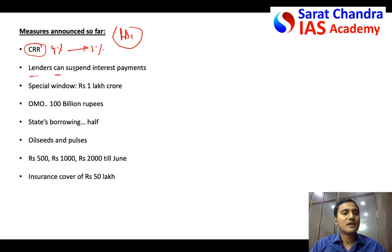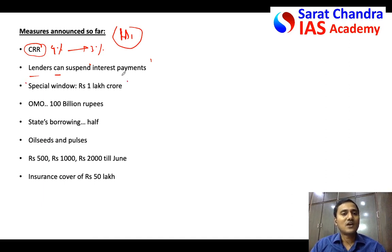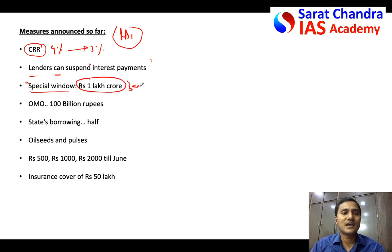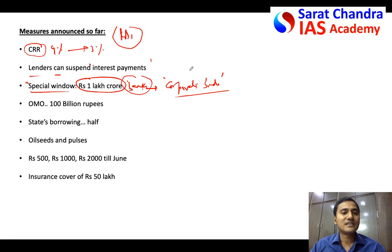Interest payments to banks were also postponed — frozen for three to four months — to give relief to corporates and MSMEs who took loans but were unable to repay because of COVID-19. The government also opened a special window where RBI gave almost 1 lakh crore rupees to banks, but this had to be invested only in corporate bonds to help the corporate sector.